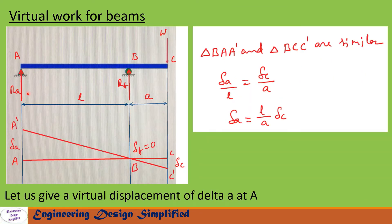Now to find reaction at A, let us give a virtual displacement of delta A at A. The beam will assume the position C prime, B, A prime. We have two similar triangles: B-A-A prime and B-C-C prime. Here delta A is the displacement at A, delta B equals zero at B, and delta C is the displacement at the far end. From these two triangles we can write: delta A divided by L equals delta C divided by A.